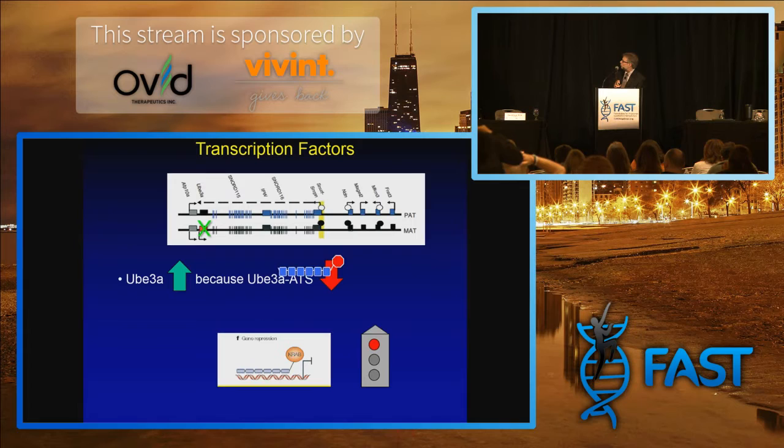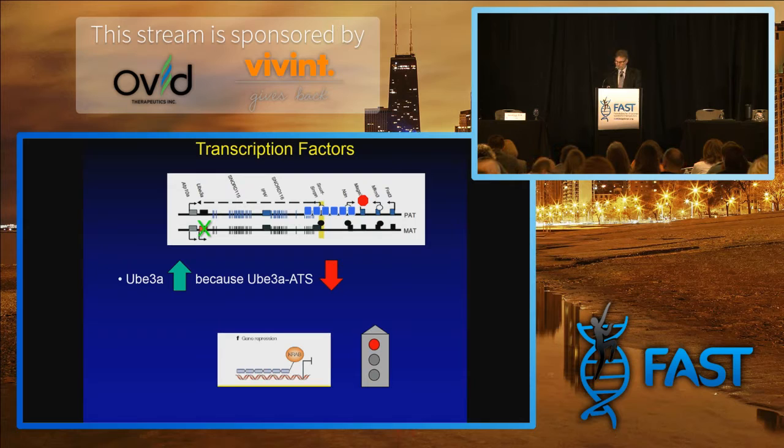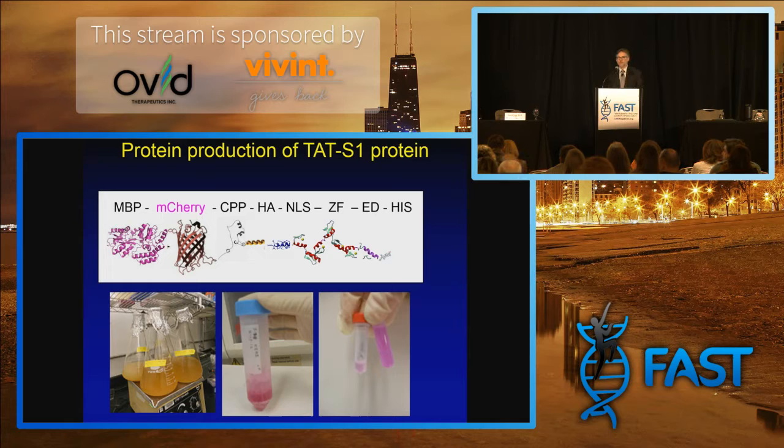In our case, we're going to make a factor that we're going to put in, and it's going to land just about there and shut off this antisense transcript somewhat, allowing expression of UBE3A.